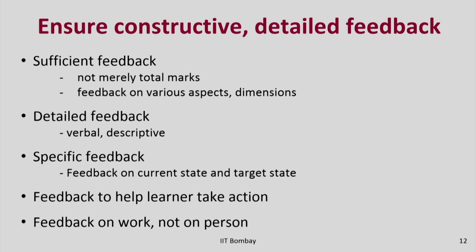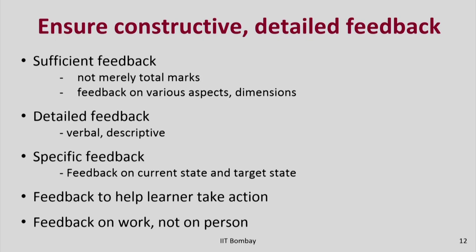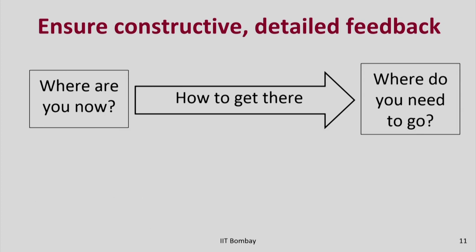The feedback should ideally be verbal and descriptive. It is possible to give detailed feedback only when it is verbal and descriptive, whereas with numerical feedback it is difficult to provide detail using just numbers. The feedback should also be specific — it should not say something vague like 'this is wrong' or 'you need to improve.' Instead, the feedback should address the current state, the expected or desired state, and the target state and how to get there.